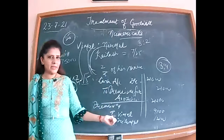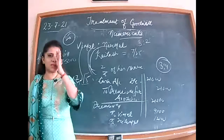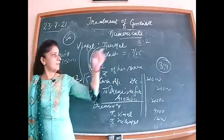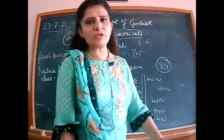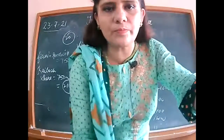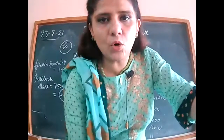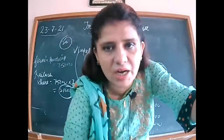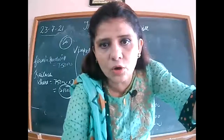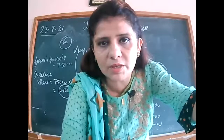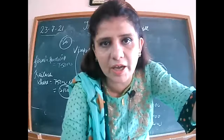Being goodwill brought in cash by Kailash, sacrificing partners' capital accounts credited in sacrificing ratio 3:4. Time is up; remaining back exercise questions will continue tomorrow, along with wrapping up the goodwill topic. Tomorrow there will also be a Business Studies test on the chapter Business Environment.